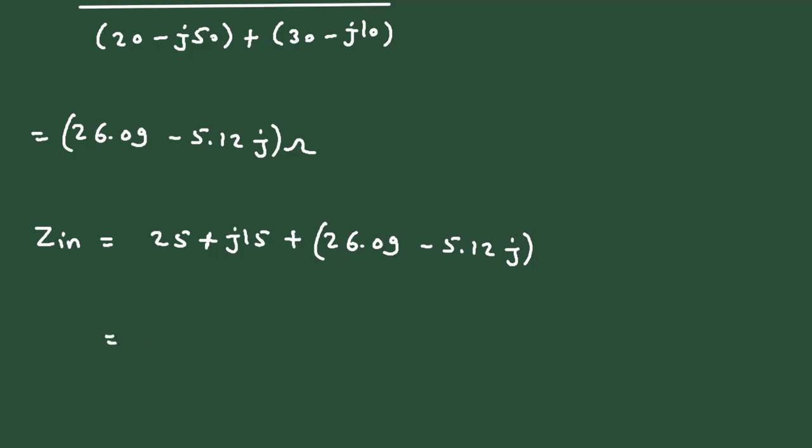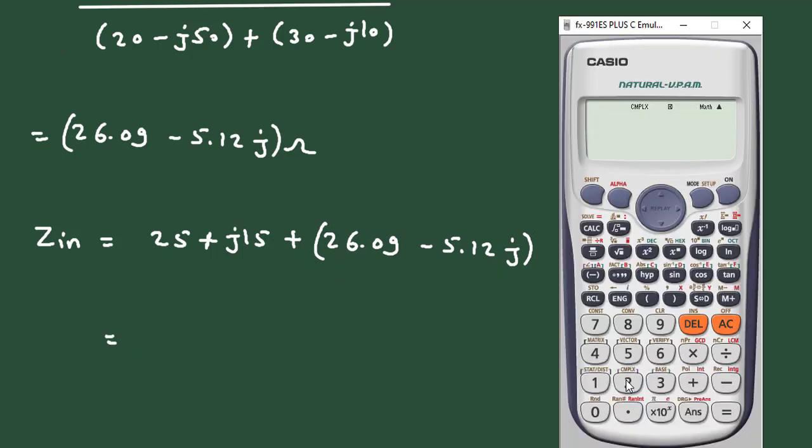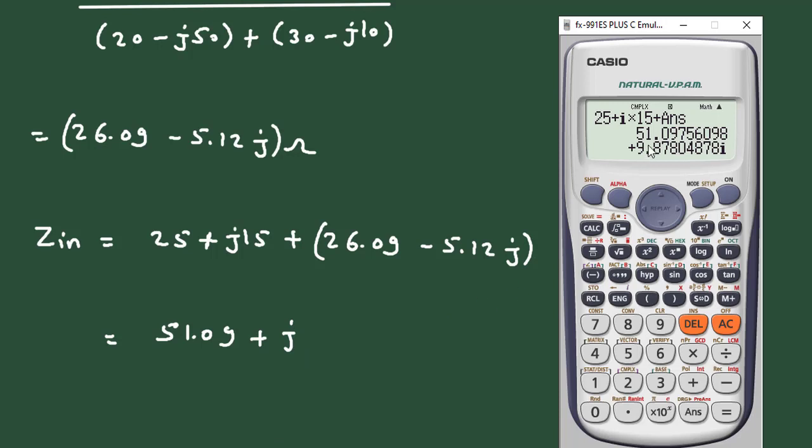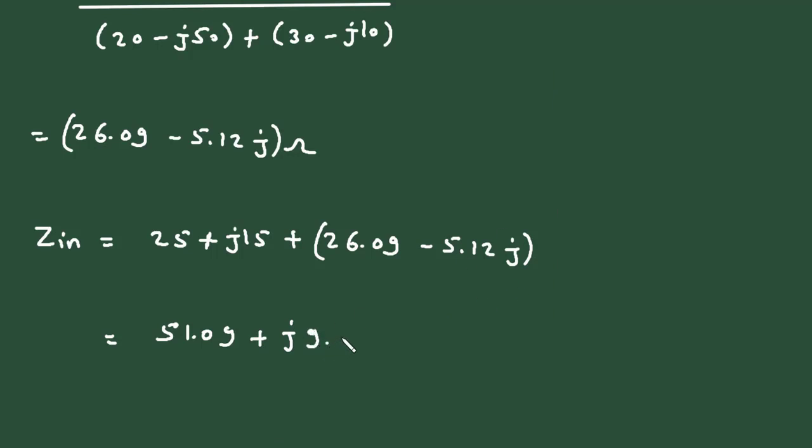So if we solve this, 25 plus J15 plus the answer, it is equal to 51.09 plus J9.87. So Zin is equal to this value and its unit will be ohm.